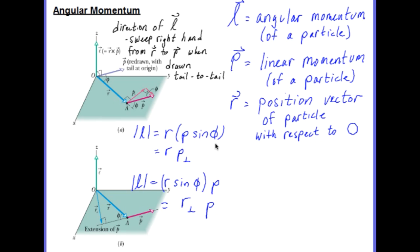And just like with torque, we can associate the sine phi with one or the other. If we associate it with P, as we do here in this diagram, then we use the component of P that is perpendicular to R. And if we associate the sine phi with R, then we multiply the full value of P times the perpendicular distance to the extension of P.